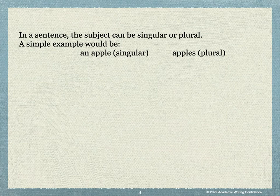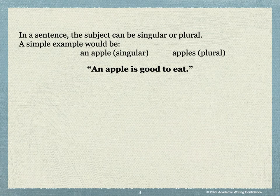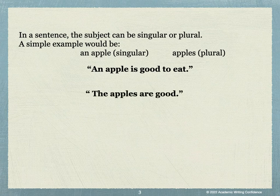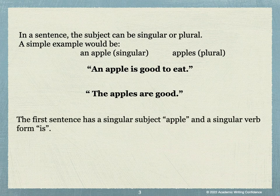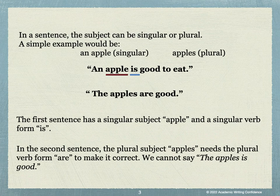The following sentence shows a singular subject used in a sentence: An apple is good to eat. A plural subject sentence could be: The apples are good. The first sentence has a singular subject, apple, and a singular verb form, is. In the second sentence, the plural subject, apples, needs the plural verb form, are, to make it correct.